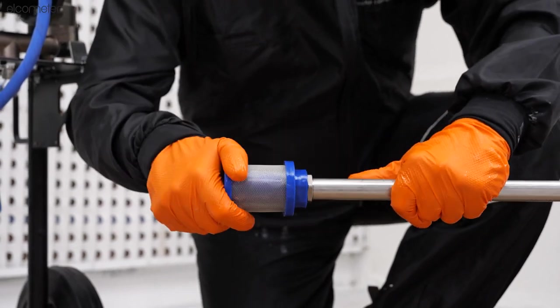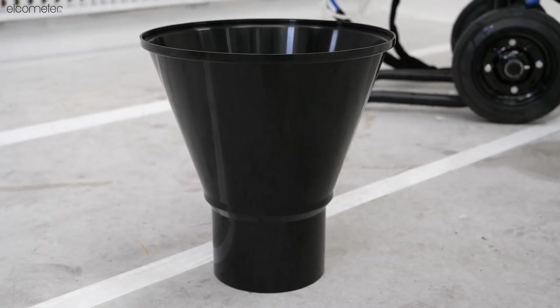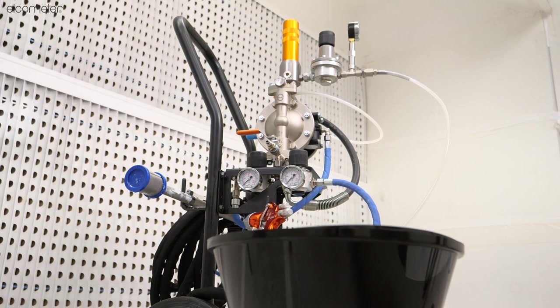Whilst all Elcometer CARA pumps are supplied with a product intake hose as standard, if you have purchased a hopper, an optional accessory, attach this here instead.